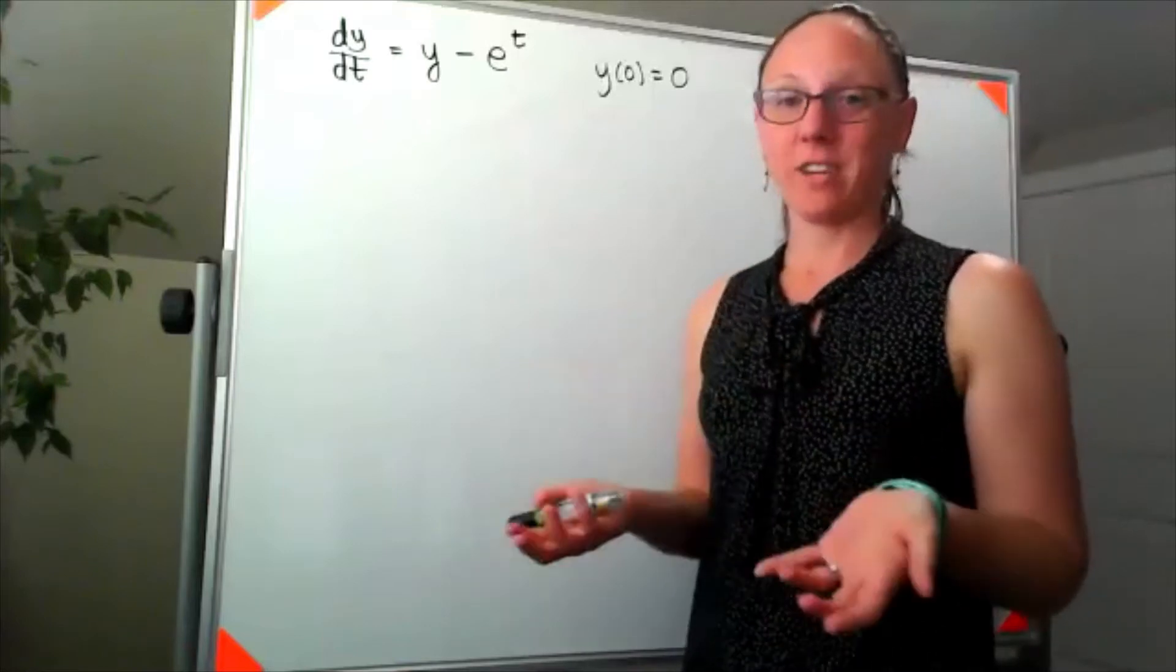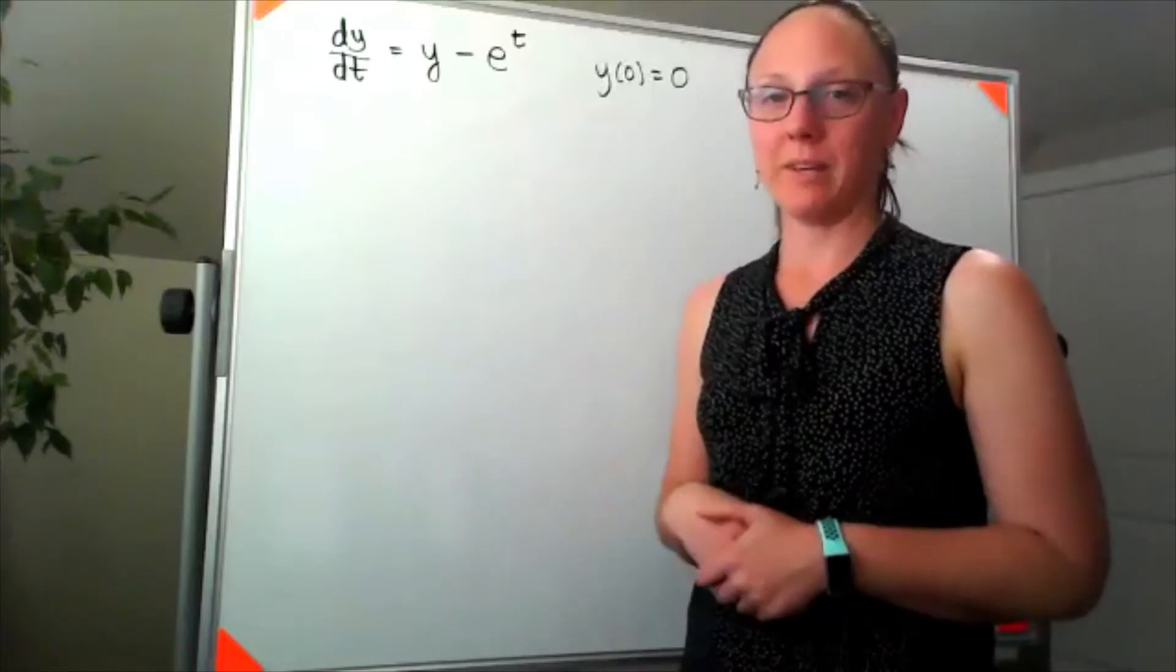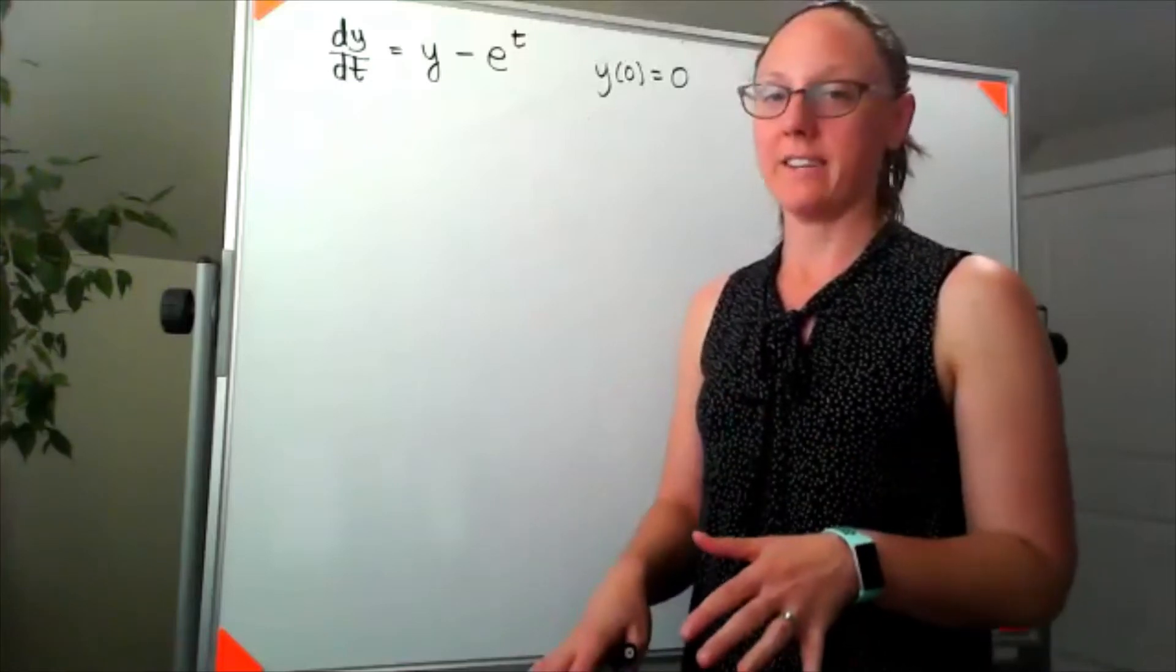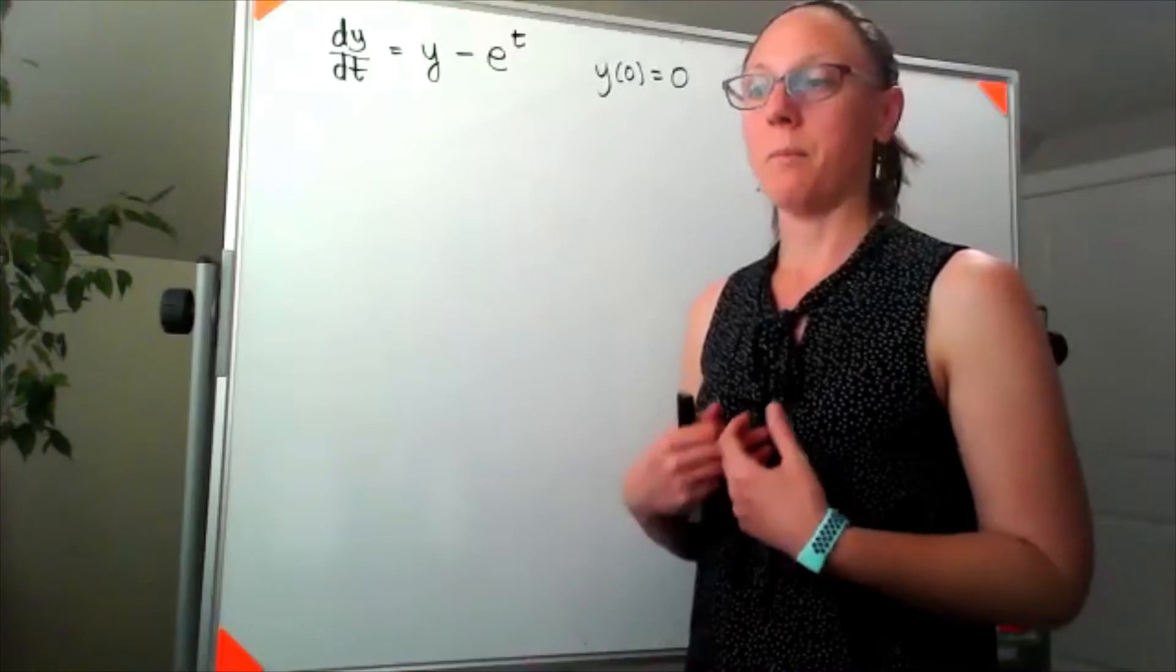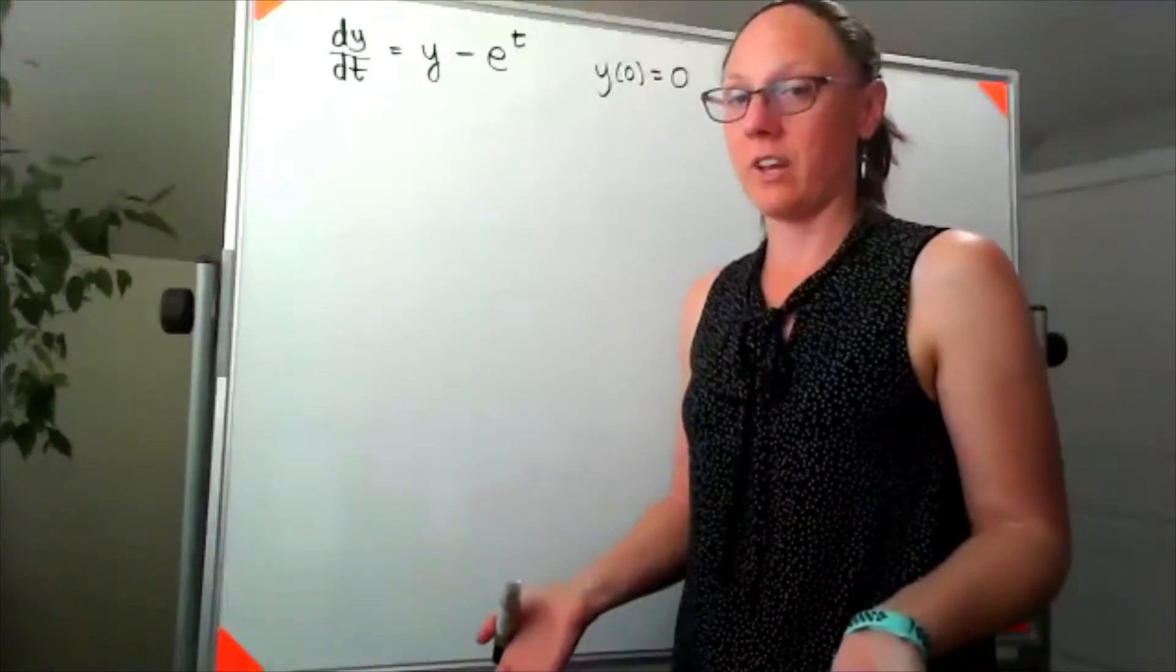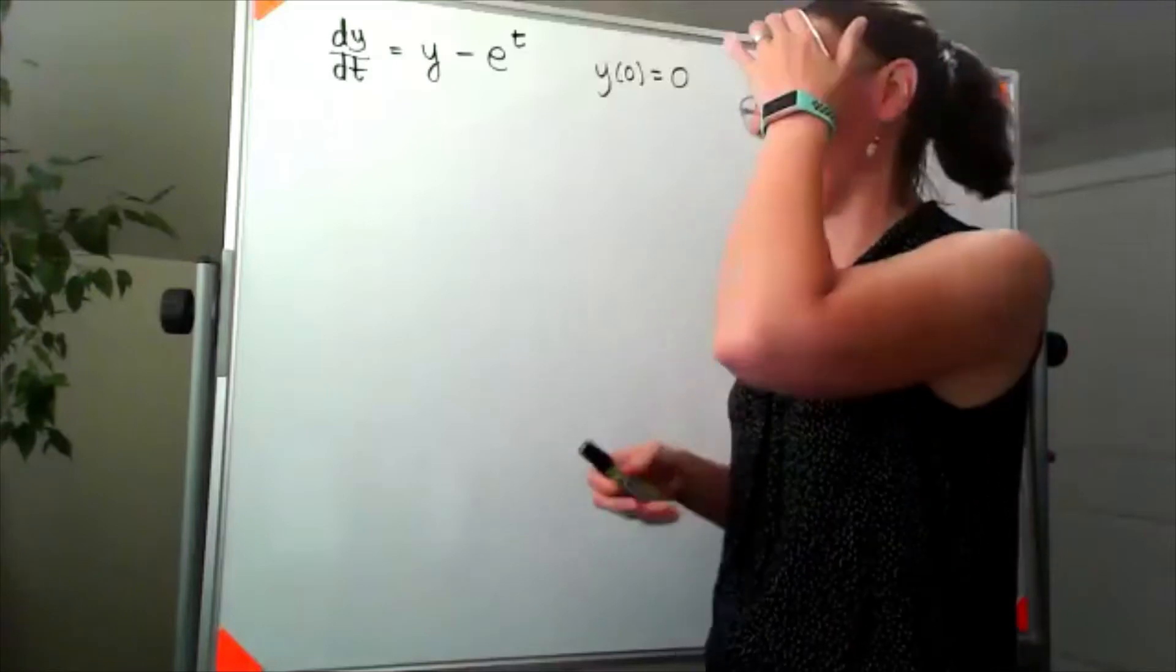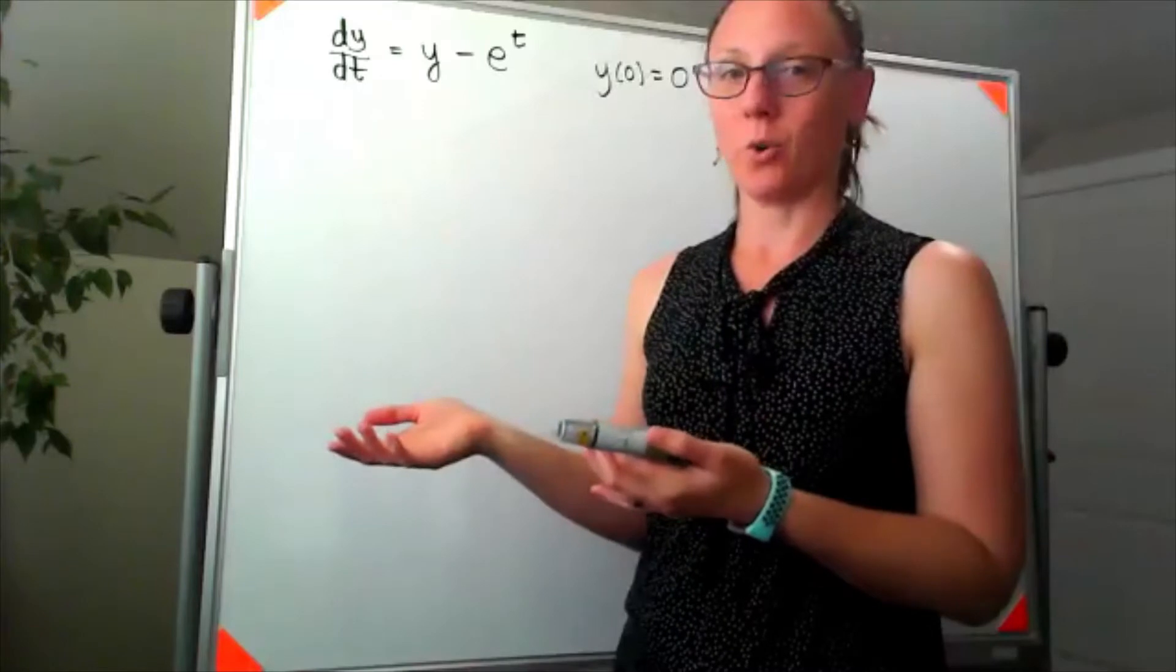So the next thing that I'm going to check, and I'll tell you that in the context of our 17b class, if you've been asked to solve it, it's either separable or it's first order linear. Those are the only kinds of differential equations we're going to solve. We might talk about solutions for other things, we might even find numerical approximations for other things, but if you've been asked to solve it, it's got to be separable or first order linear. So we decided it's not separable, so I'm hoping it's first order linear.